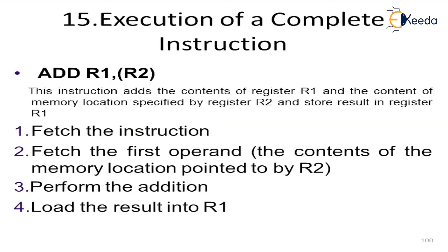Now let us add some variables to it. Suppose R1 contains the number 5, and R2 contains 4. Now 4 is pointing towards a memory location which contains the number 10. So 10 plus 5 will give 15, and the output will be 15, which will be stored in register R1.